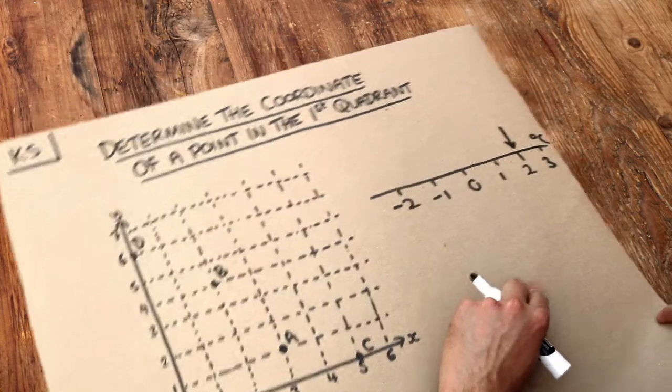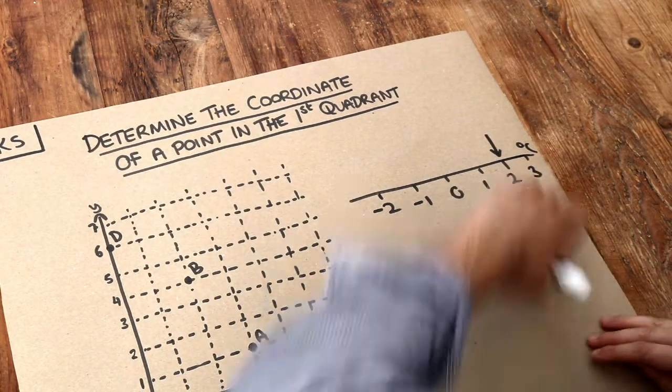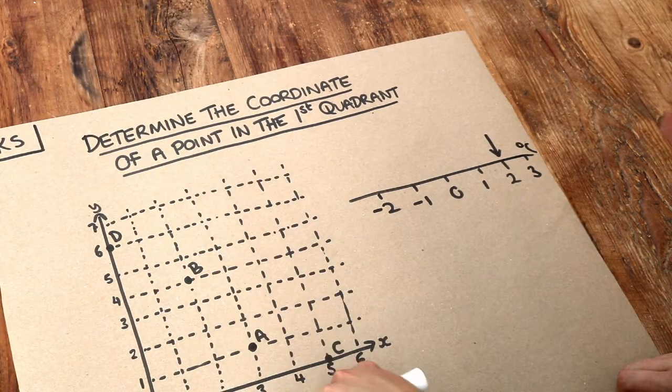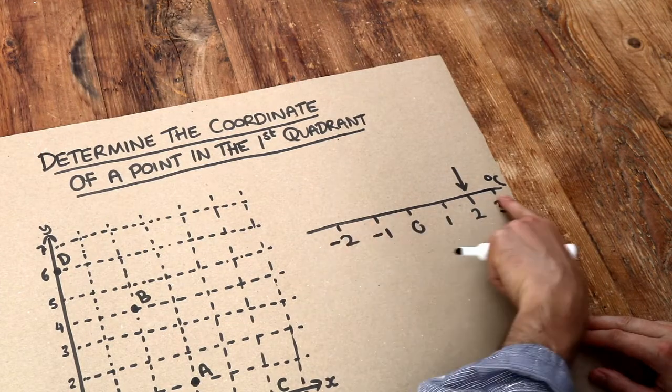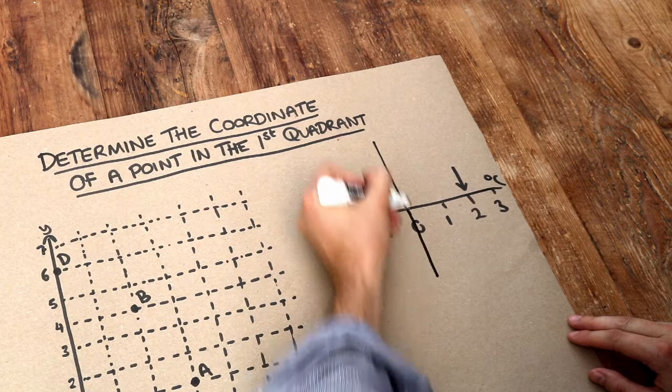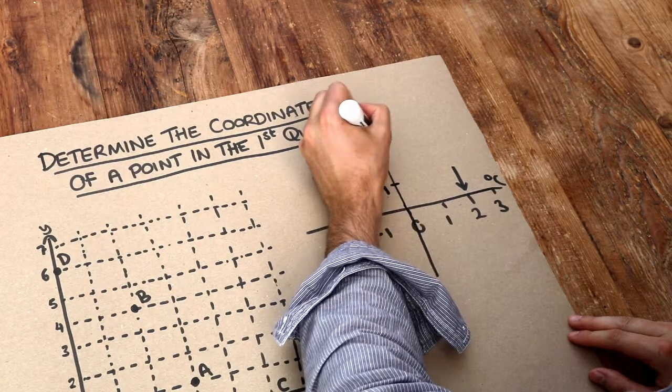But sometimes we need to describe where things are in two dimensions, and this is two dimensions because I can not only go left and right but I can go up and down. Therefore, in addition to our left-right number line, we have a second number line that goes up and down.